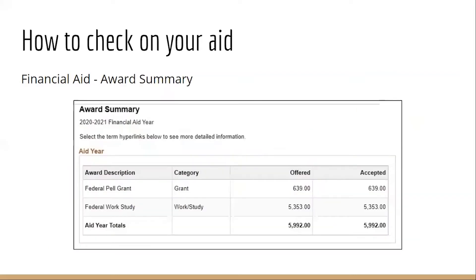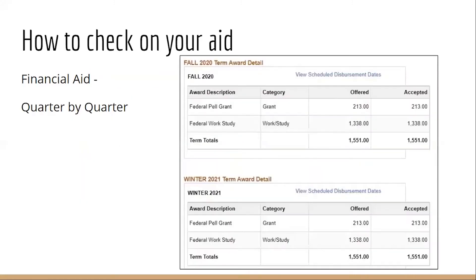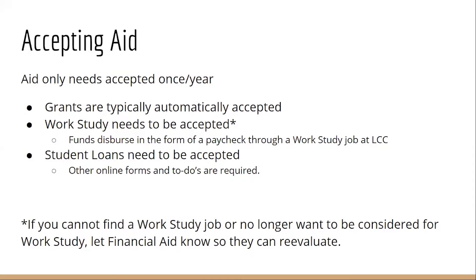It will show a summary of your financial aid award. This summary shows the entire school year, then it will break it down by quarter. The types of aid that need to be accepted are typically student loans and work-study. Grants are money that does not have to be paid back and are typically automatically accepted on your award. Work-study is the type of funding that allows you to receive aid in the form of a paycheck from a job on campus, and all of that can be accepted here in CTCLink. If you cannot find a work-study job or are no longer wanting to be considered for work-study, just let the financial aid office know so they can reevaluate your award.